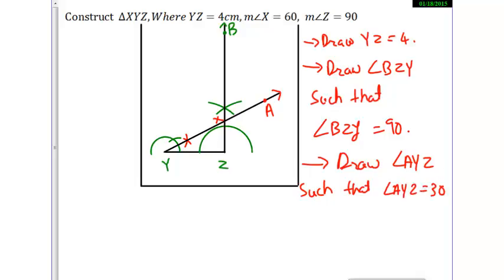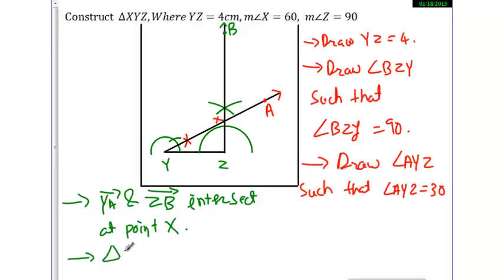Now let me go ahead with another color pen, let me take green. Next point would be: Ray YA and Ray ZB intersect at point X. So triangle XYZ is constructed.